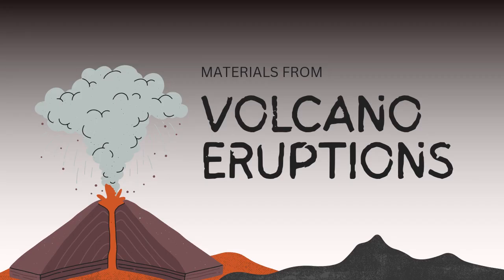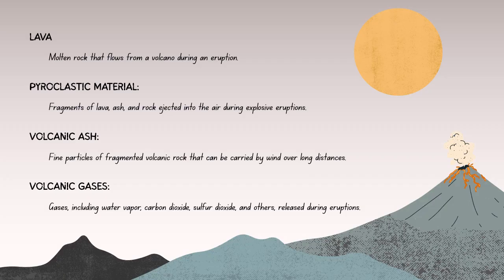Now let's learn about volcanic eruption materials. Lava is molten rock that flows onto the earth's surface during an eruption — it can be either fluid (low viscosity) or sticky and thick (high viscosity). Volcanic ash consists of fine particles of rock and glass created during explosive volcanic eruptions; ash clouds can pose significant hazards to both aviation and human health. Pyroclastic material consists of rapidly moving mixtures of hot gas, ash, and volcanic rock fragments — these flows can be extremely destructive, moving downhill at high speeds.